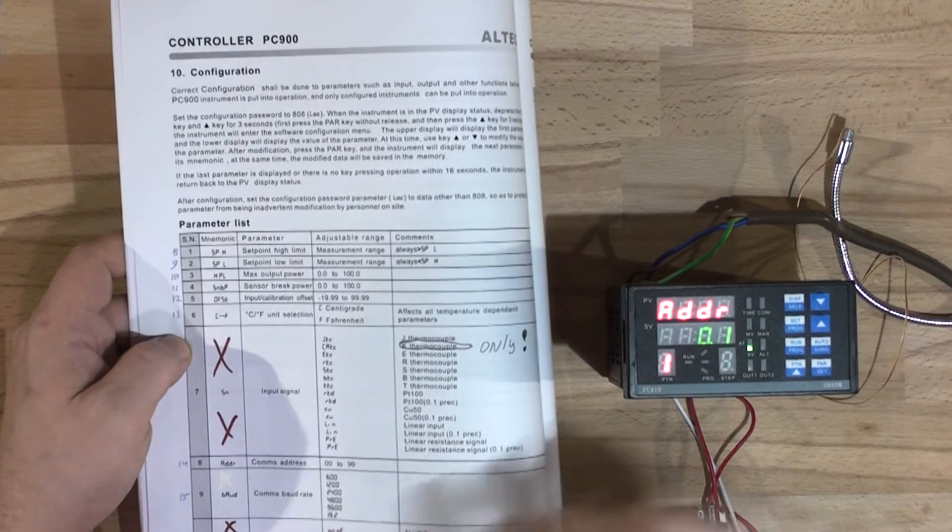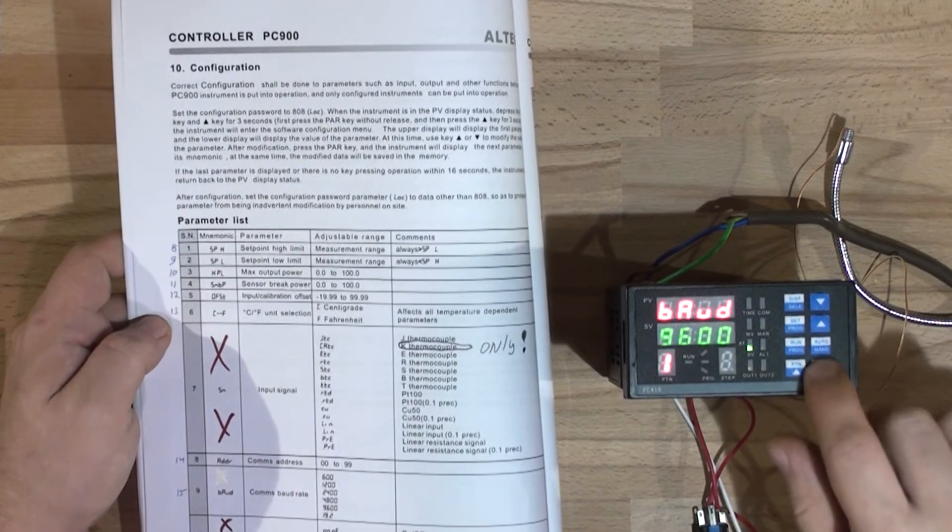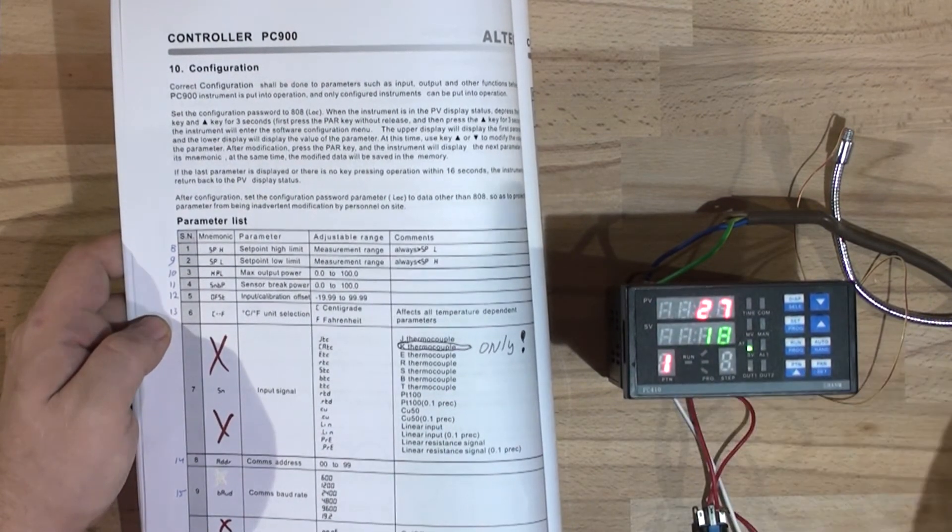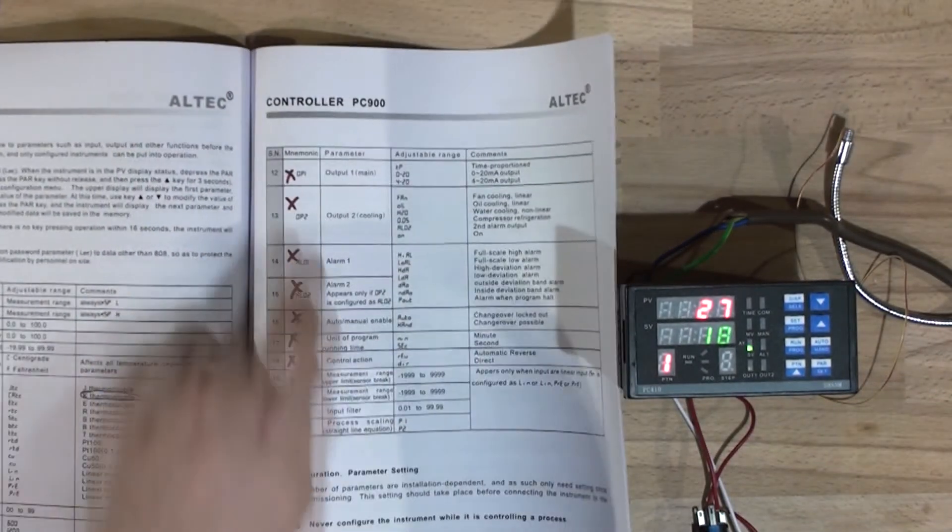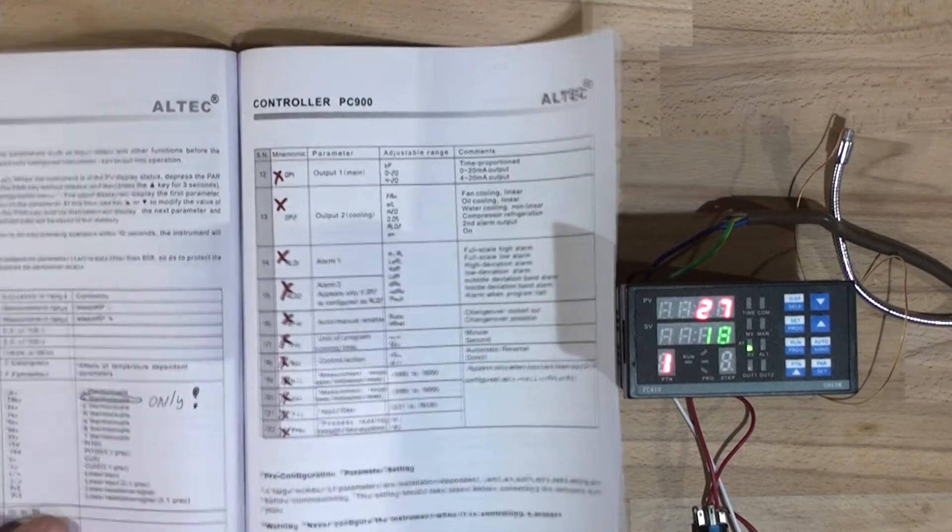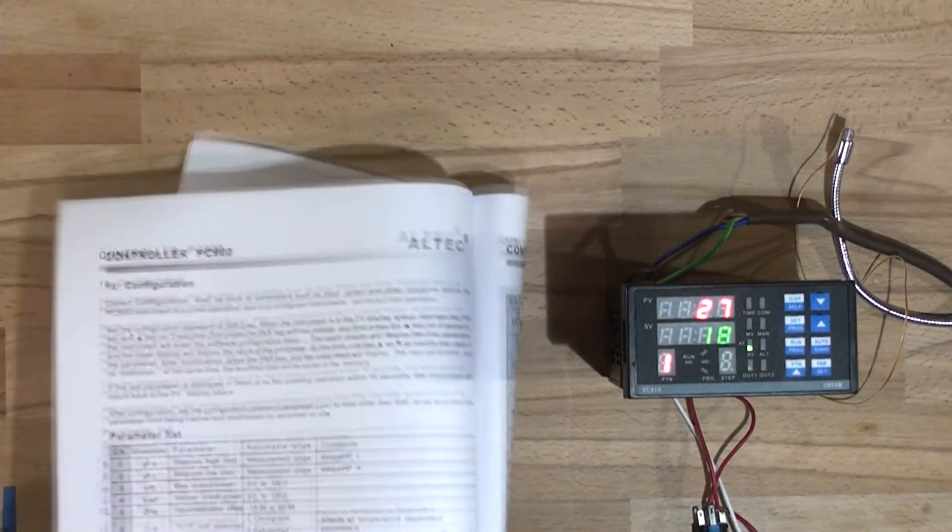Then we got the Celsius Fahrenheit and then the address for the COM port and the connection rate. That's it, there's nothing else.